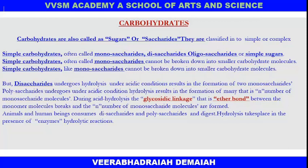During the chemical reaction of acid hydrolysis, the glycosidic linkage, or ether bond, or oxygen bridge, is broken down. Monomer molecules break and a number of monosaccharide molecules are formed. Animals and human beings consume disaccharides and polysaccharides and digest them. Hydrolysis takes place in the presence of enzymes, which are called hydrolytic reactions.